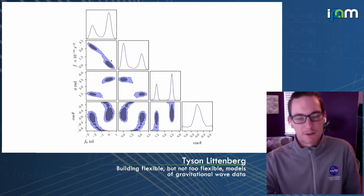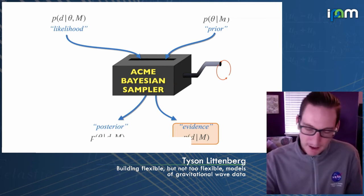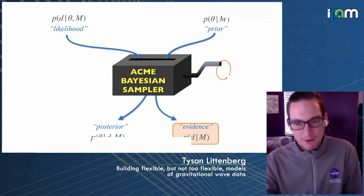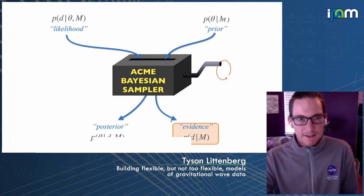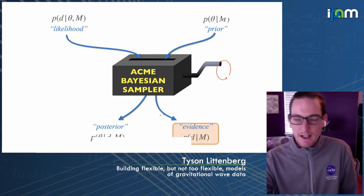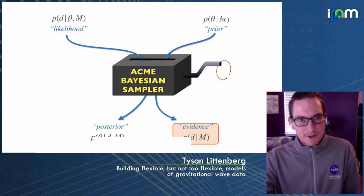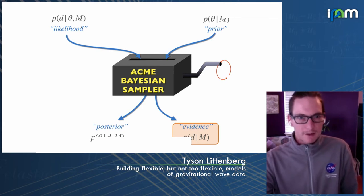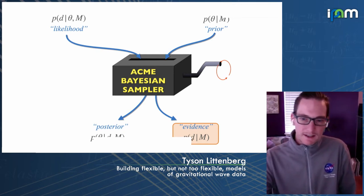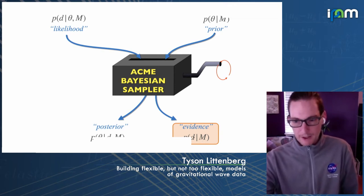The other thing that pops out of your sampler is the evidence. The likelihood is the probability that you'd see some data given a certain set of parameters for a model, and the evidence is the probability that you'd see the data given the model—marginalized over all model parameters. This is why it's also called the marginal likelihood.